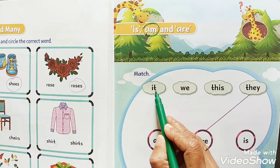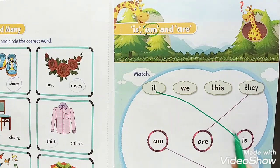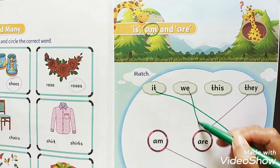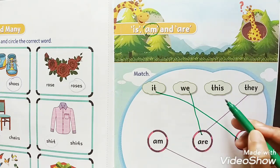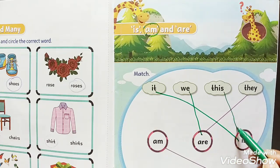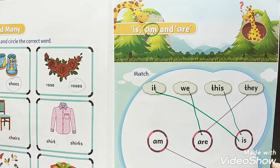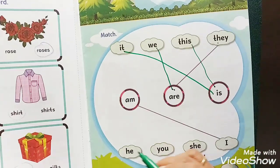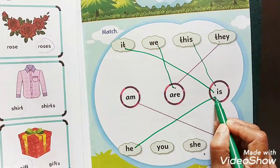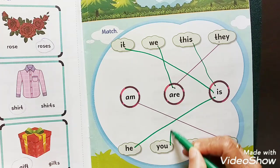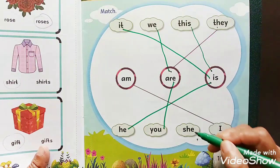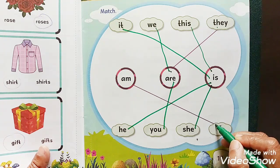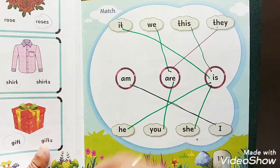It is. We are friends. This is a bottle. They are friends. He is a boy. You are a girl. She is a girl. I am a girl too.